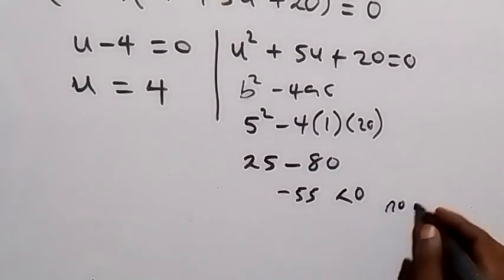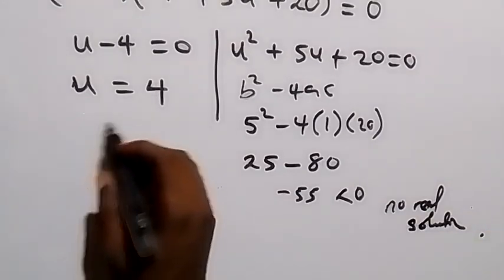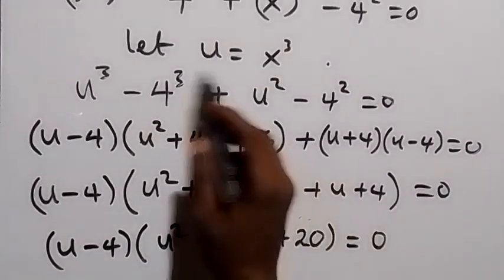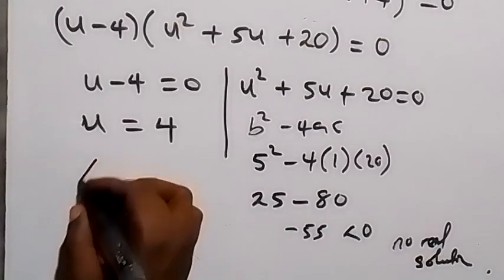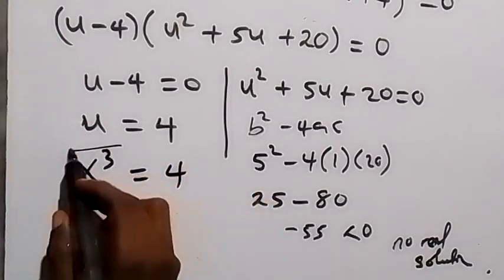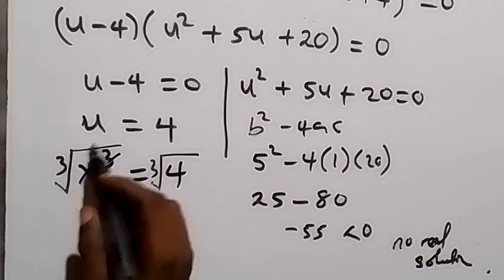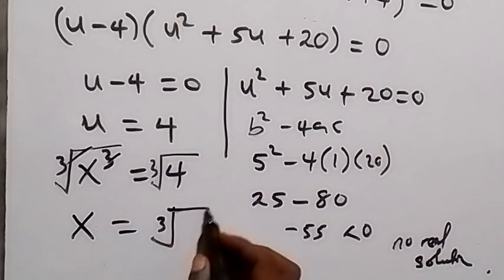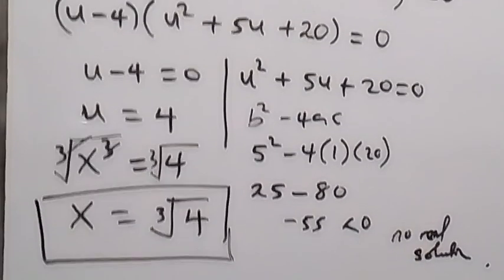Since the discriminant is negative, there is no real solution from the quadratic. So the only solution comes from u equals 4. Recalling that u equals x raised to power 3, we have x³ equals 4. Taking the cube root on both sides, x equals the cube root of 4, and this is the real solution to this problem.